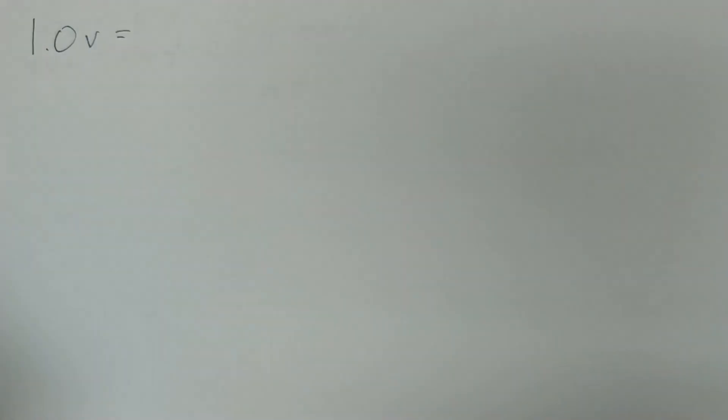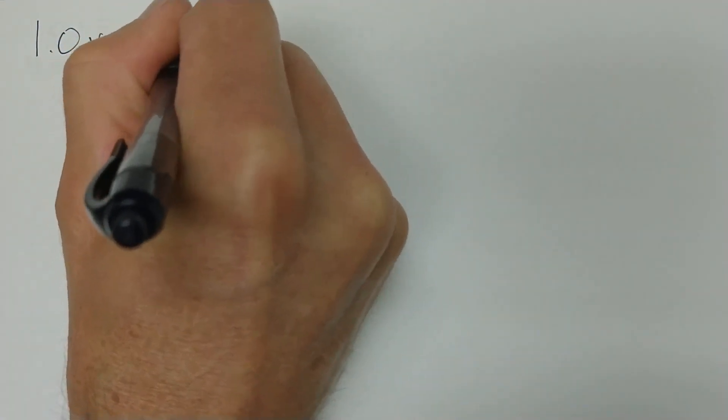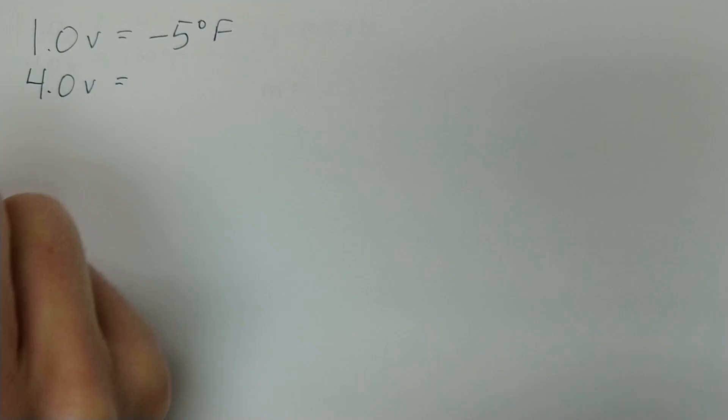Okay, so the very first thing that we're going to need to do if we are going to scale a sensor is that we need to find two data points. In other words, two points where we know how the voltage of the sensor correlates with the engineering unit that we're going to convert this into. So for example, if we're using a temperature sensor, we might find that one volt correlates with negative five degrees Fahrenheit. And on the other end of the scale, maybe we find that four volts correlates with 130 degrees Fahrenheit.